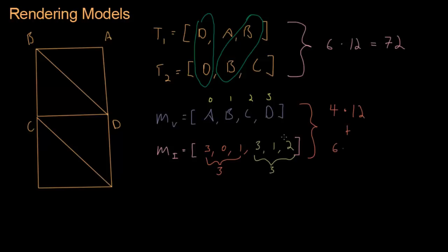Whereas down here, we have four vertices times twelve plus six indexes times two bytes each (usually all we need is two). So four times twelve plus six times two is actually only sixty. That's a pretty good savings - about fifteen percent.